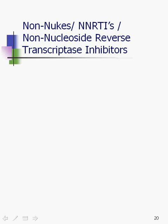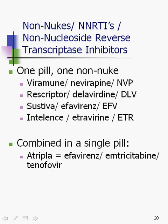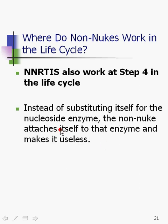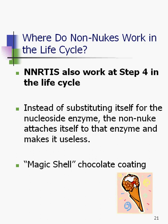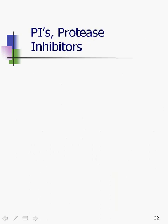Non-nukes, or NNRTIs — non-nucleoside reverse transcriptase inhibitors — there are four approved for use right now. They work in the same place in the life cycle: step four. But instead of being a fake building block, the non-nucleoside actually attaches itself to the enzyme and makes it useless. I always think of it as magic shell chocolate coating — the enzyme is the ice cream and the drug is the chocolate shell. It makes it so HIV can't get to what it needs, and basically renders the enzyme useless.